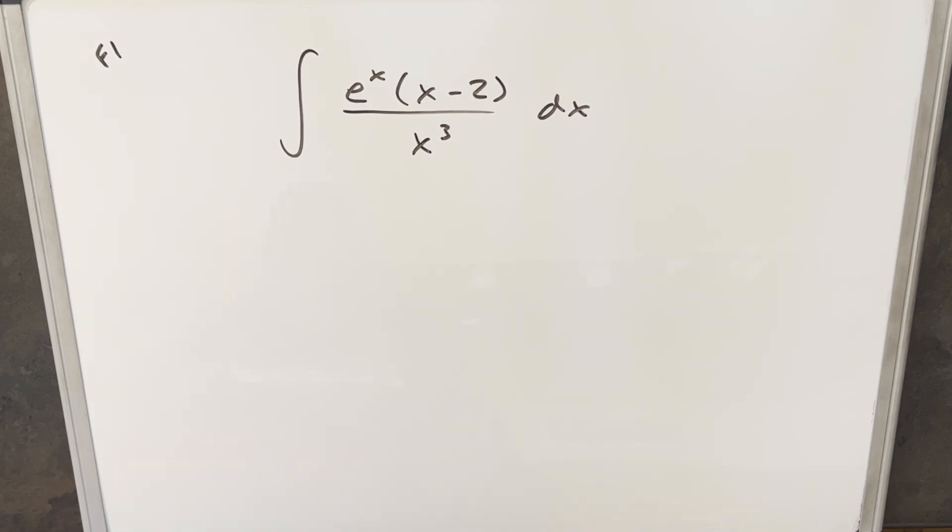We have the integral of e^x times (x minus 2) over x cubed dx. Now the first thing I noticed is it's kind of hard to deal with in this form. I don't see an obvious u-substitution. I think integration by parts might work, but it might be a little messy that way.